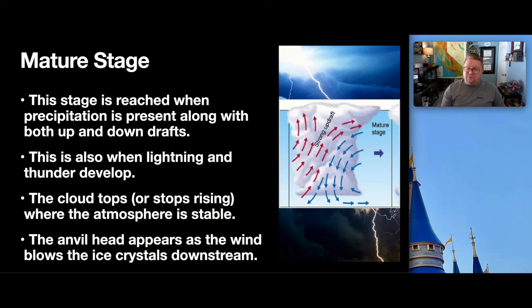What will end up happening is it will reach its mature stage, which becomes cumulonimbus, nimbus meaning rain bearing. This stage is reached when the precipitation is present, along with both up and downdrafts. So, you have a strong updraft, which is continuing to feed the cloud. You also have a downdraft, which is going to cause precipitation, in which you're going to lose some of the water vapor as rain droplets. There is also lightning and thunder developed within this system. And then, what's interesting is that the cloud tops, or meaning that it stops rising, where the atmosphere is stable. And that being said, you then create that anvil head, as we can see here. The anvil head is actually a great tell sign of the direction of the wind flow, the upper wind flow. Because the anvil head appears as the wind blows the ice crystals downstream. So, we know that the upper air in this diagram is actually moving towards the right.